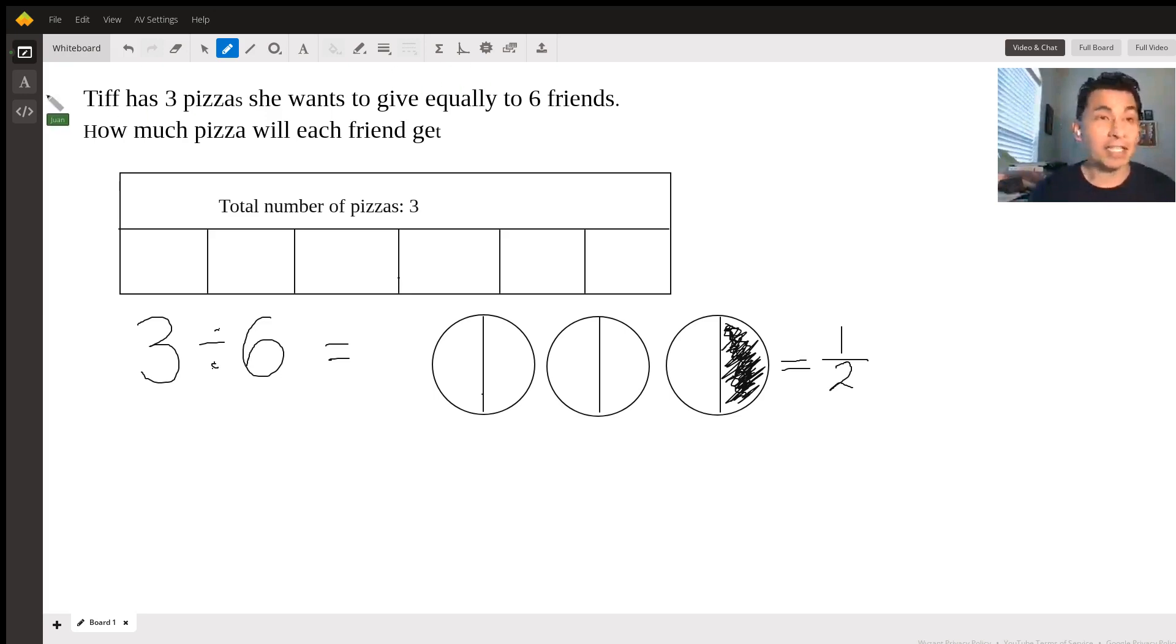Let's start. It says Tiff has 3 pizzas she wants to give equally to 6 friends. How much pizza will each friend get? Well, I want to explain this problem really fast. The first thing you need to do is identify keywords.